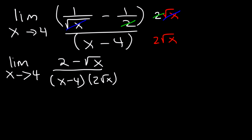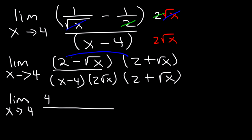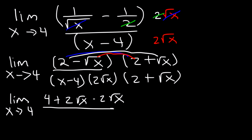So now at this point, we need to multiply the top and the bottom by the conjugate of the numerator. So instead of 2 minus root x, it's going to be 2 plus root x. So on the top, we're going to FOIL. 2 times 2 is going to be equal to 4. Let's not forget to rewrite the limit expression. And then 2 times root x is positive 2 root x. And multiplying those two gives us negative 2 root x. And root x times root x is simply x, both negative in front.